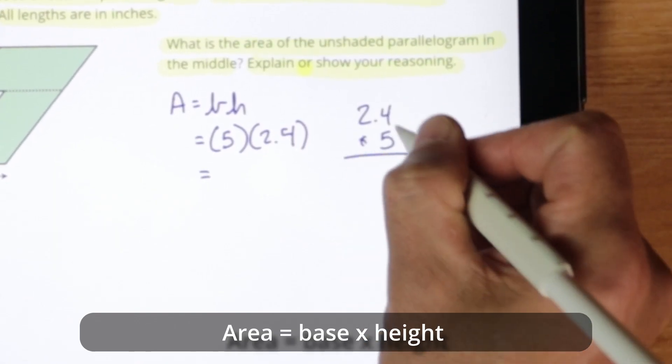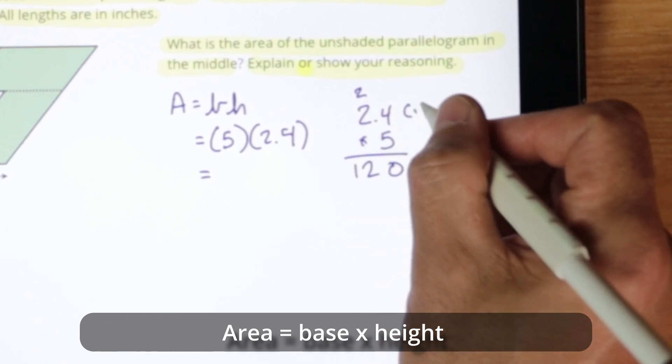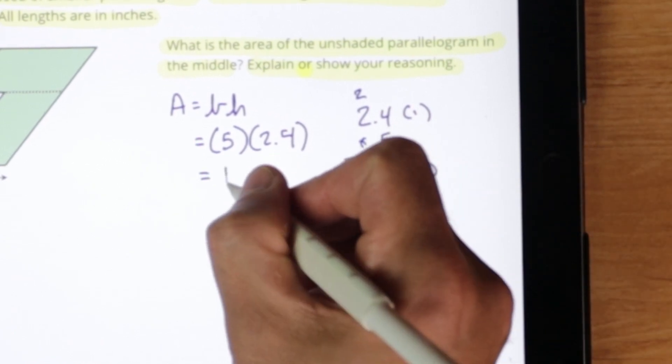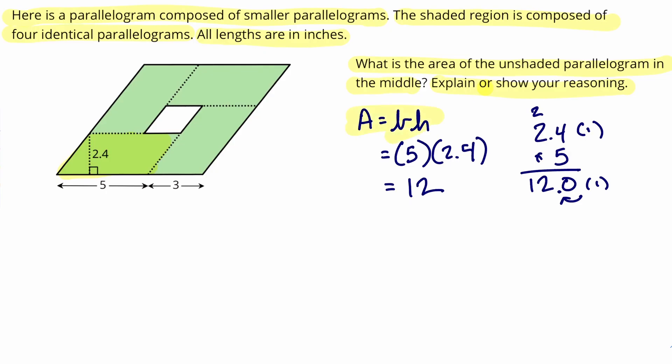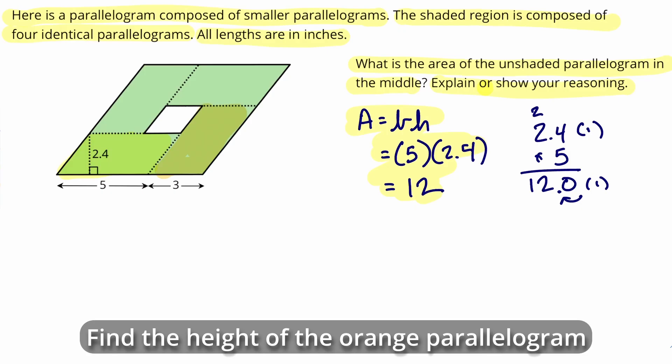So we need to multiply 2.4 by 5, and it looks like we're going to get 12. So we know the area of that parallelogram is 12, and now we have an identical parallelogram right next to it.